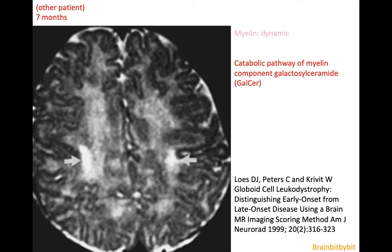Myelin is formed by the oligodendrocytes, but it doesn't stay the same once it is formed — the myelin is renewed, recycled, and adjusted, so it's a very dynamic structure. Krabbe's disease illustrates that the myelin in the corticospinal tract present at birth is already recycled and broken down a few months after birth. You can see that the high signal of the corticospinal tract is higher than the unmyelinated white matter.